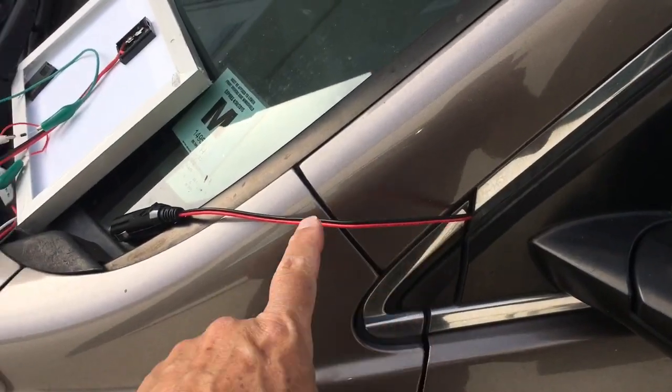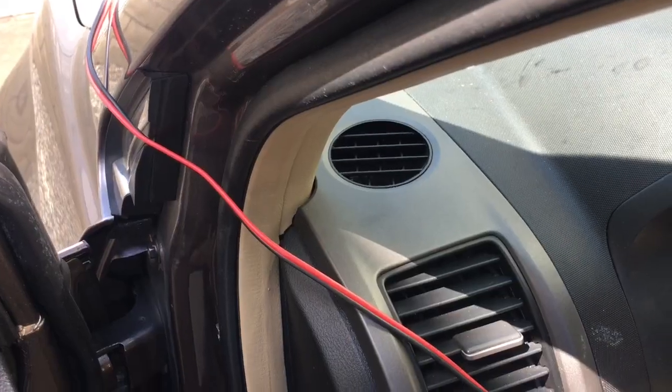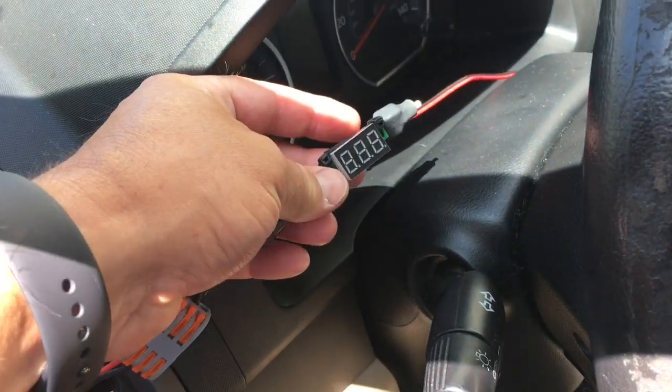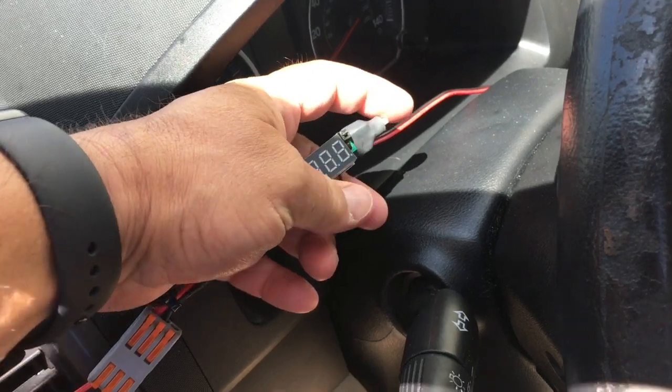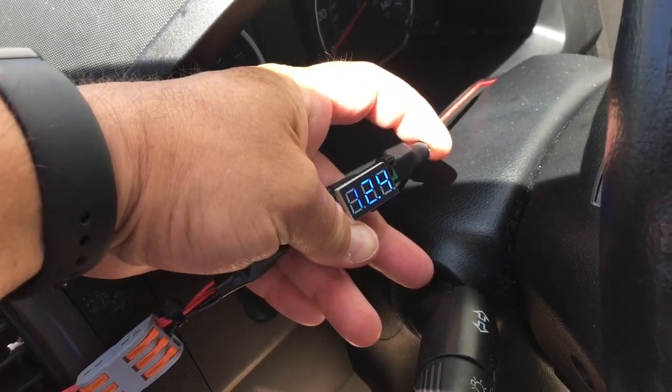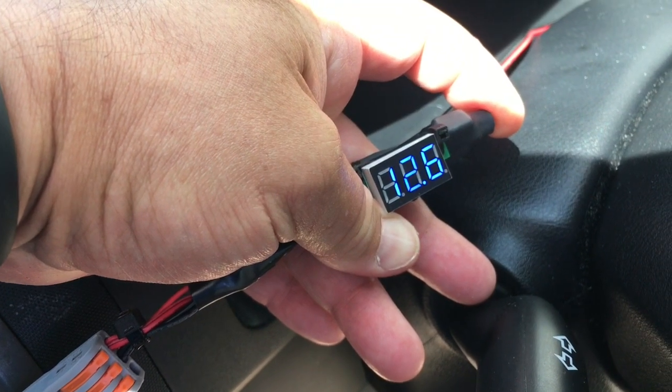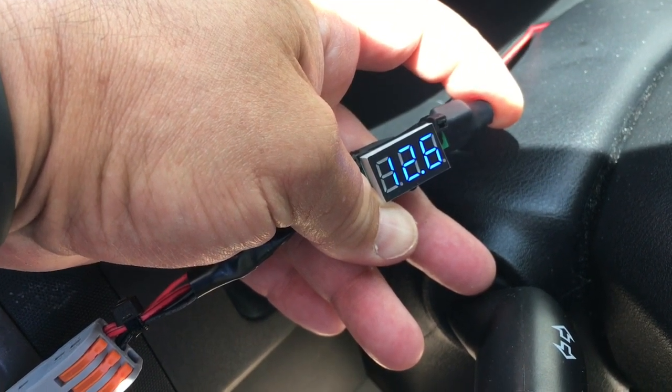So the wire is just going to be closed in the door here. Once it feeds through the door I constructed a voltmeter that has an intermittent switch that you can switch on and read the voltage just to check to see where your voltage is at.